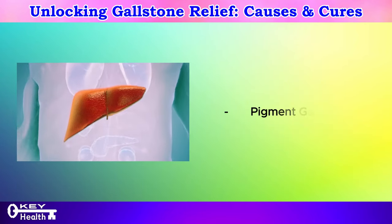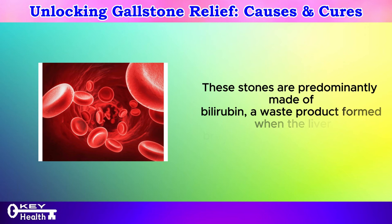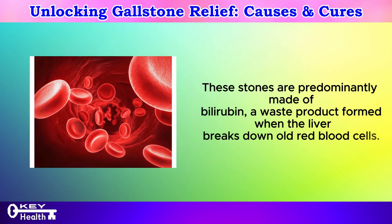Pigment gallstones are predominantly made of bilirubin, a waste product formed when the liver breaks down old red blood cells.